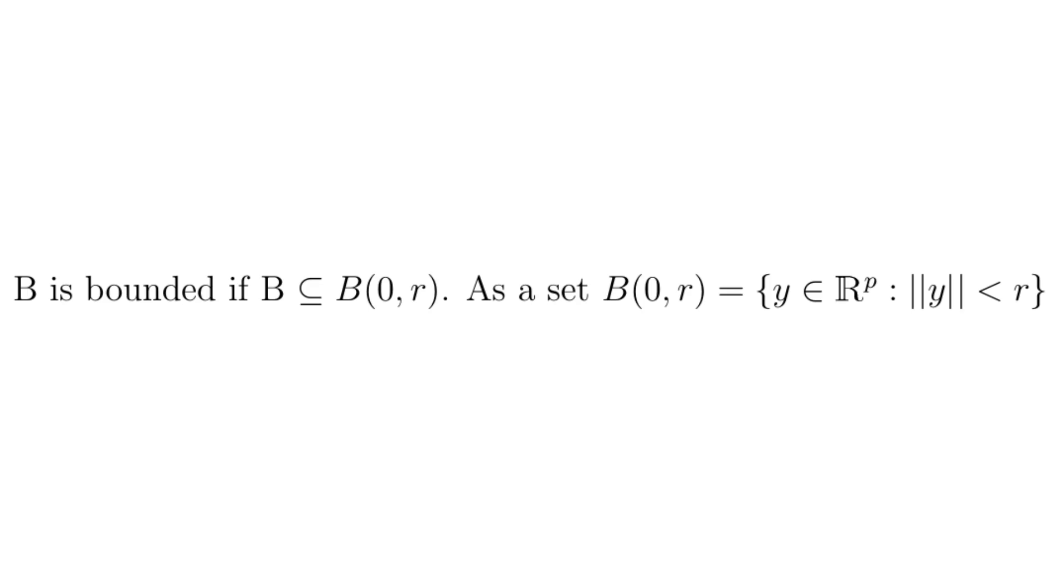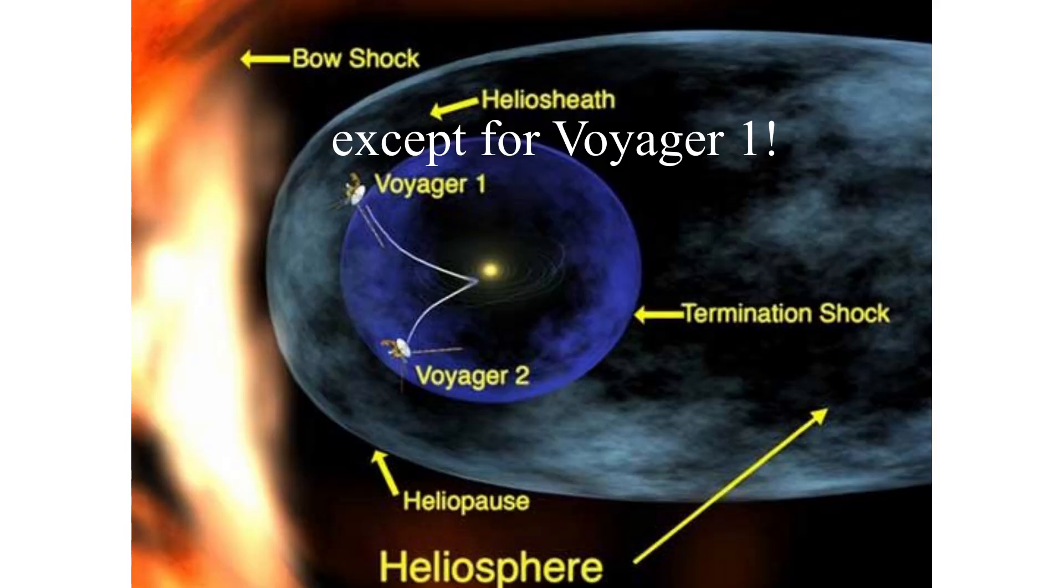For boundedness, we will use the definition that a set B is bounded if it's contained in some open ball centered at zero. We can think of all human activity as bounded by our solar system. The distance from the sun to the edge of our solar system would be the upper bound.